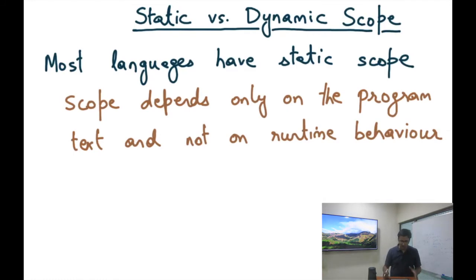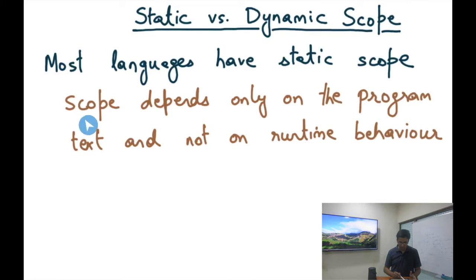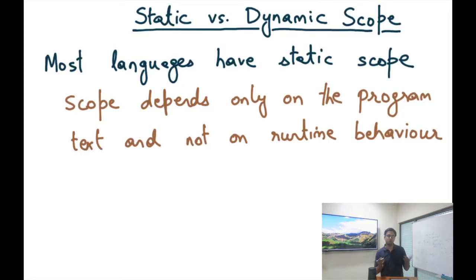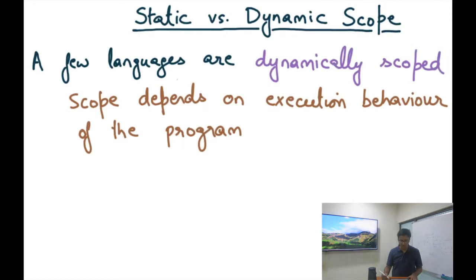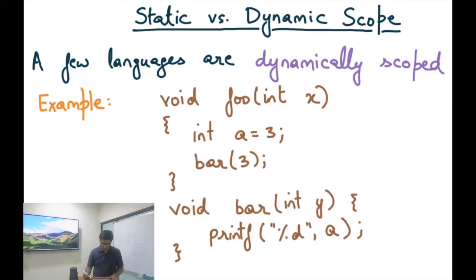Scope is of two types in most languages: static scope and dynamic scope. Most languages use static scope, which is what we've been discussing. More formally, if the scope depends only on the program text and not on runtime behavior, it's called static scope. In contrast, a dynamically scoped language has scope that depends on the execution behavior of the program.